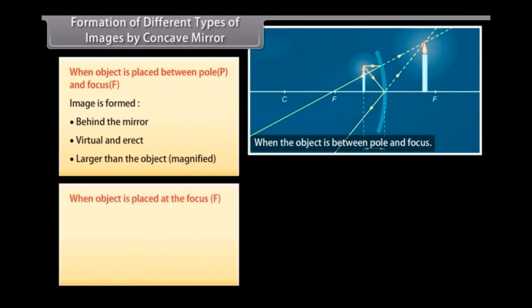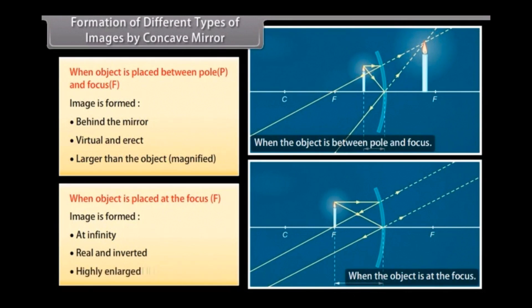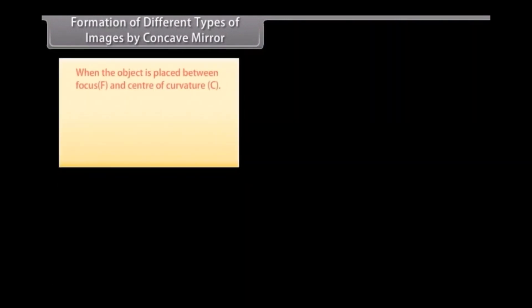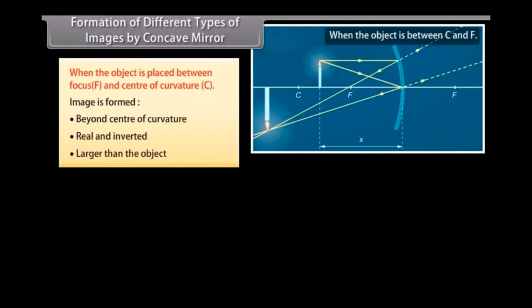When the object is placed at the focus F, the image is formed at infinity — real and inverted, and highly enlarged. When the object is placed between focus F and center of curvature C, the image is formed beyond the center of curvature — real and inverted, larger than the object.